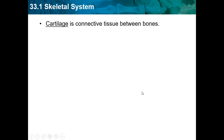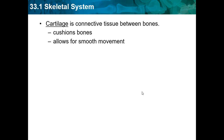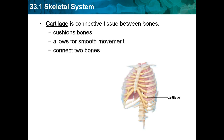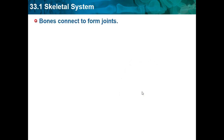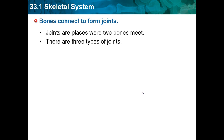Cartilage is connective tissue between bones. It cushions bones, allows for smooth movement, and connects the bones. Bones connect to form joints — joints are places where two bones meet.